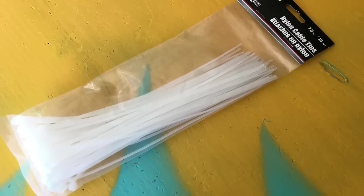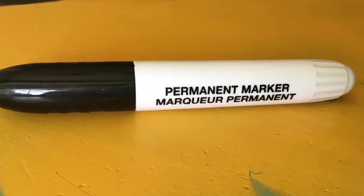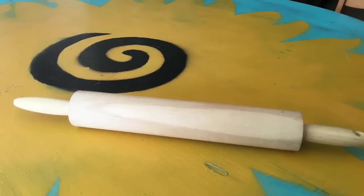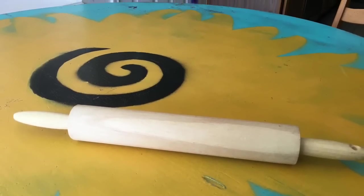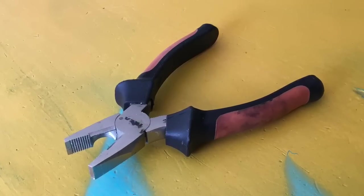You also need some zip ties. They only had white ones, but if you get black that'd be easier than coloring them. I used a permanent marker to color them. Then you're going to need something to wrap the circle handle around. I used this rolling pin because I like the diameter. You'll also need a pair of pliers just to help you out.